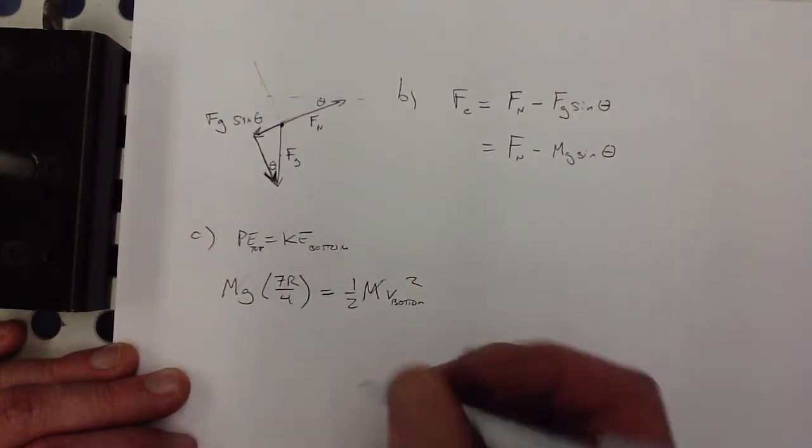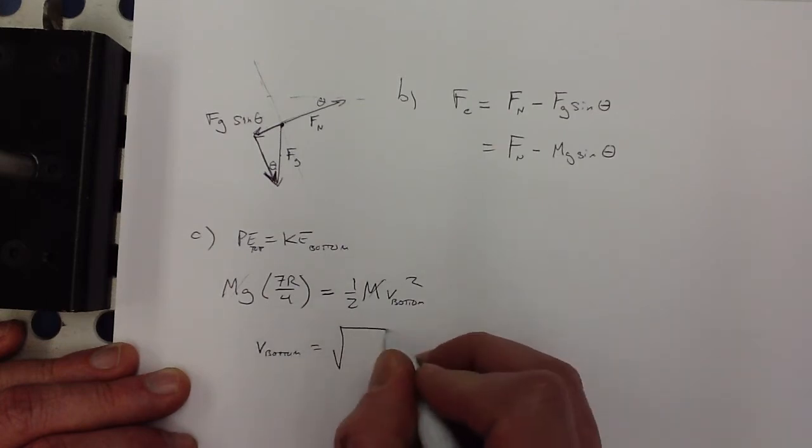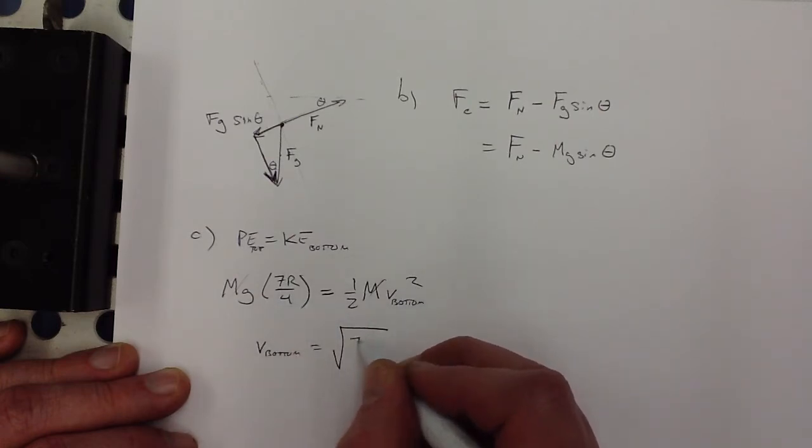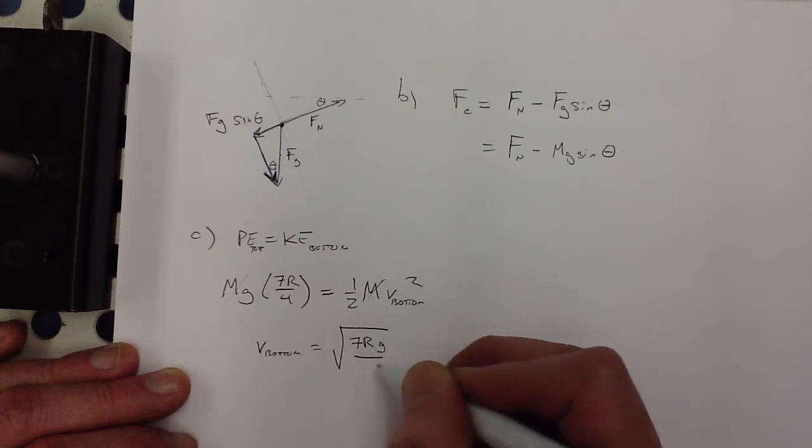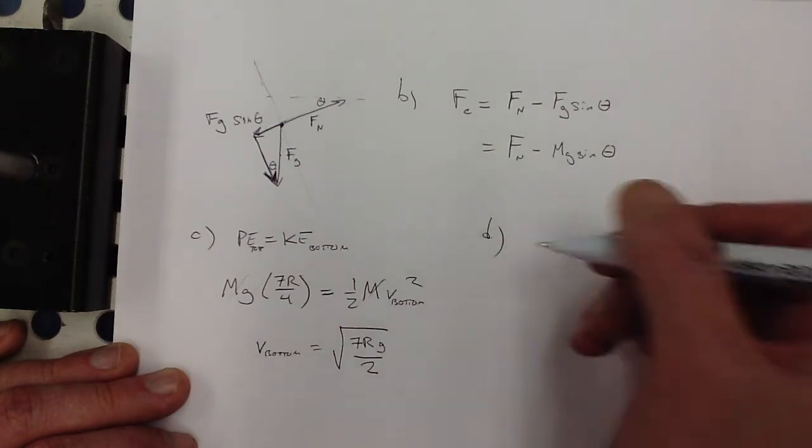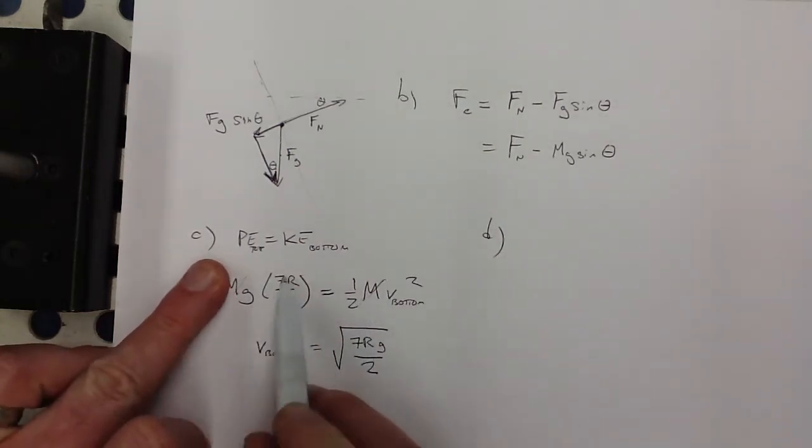The M's cancel out and we get the velocity at the bottom is plus the square root of 7RG over 2. I think. You can check my math there but I think that's right. Multiply both sides by 2. The M's cancel out and 7G. Yep, that's right.